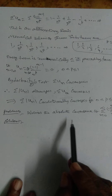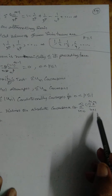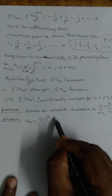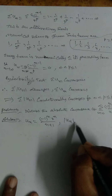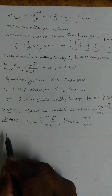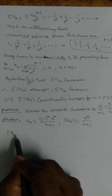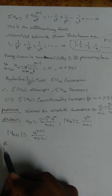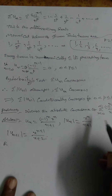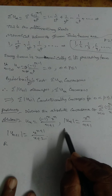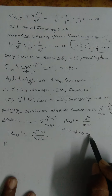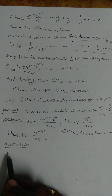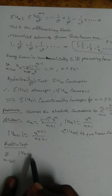Problem 9. Discuss the absolute convergence of σ(n=0 to ∞) (-1)^n · x^n / (n+1). So u_n = (-1)^n · x^n / (n+1), and |u_n| = x^n / (n+1). Since σ|u_n| is a positive term series, apply the ratio test. Compute lim(n→∞) |u_(n+1)| / |u_n|.